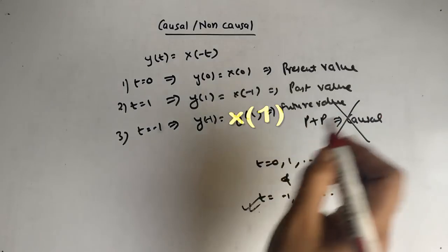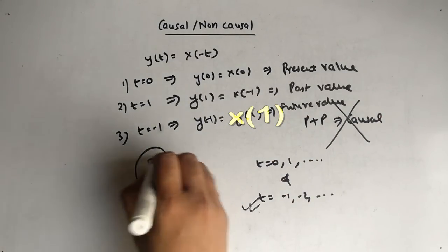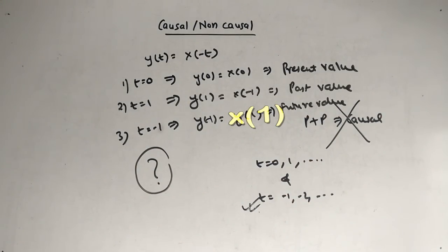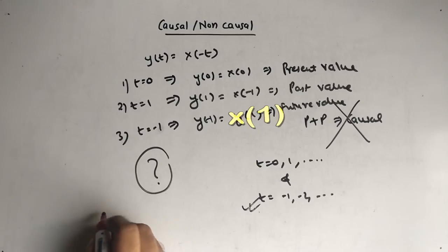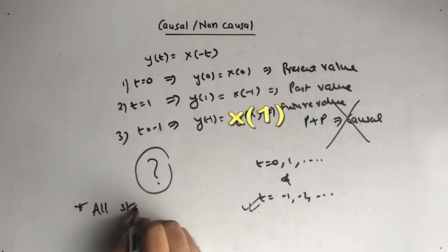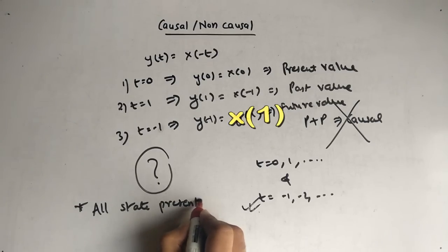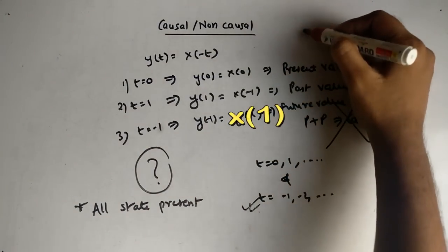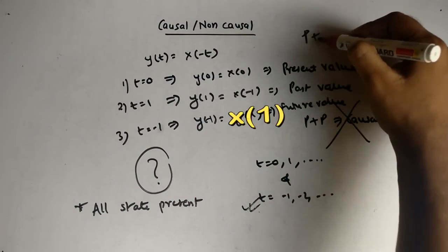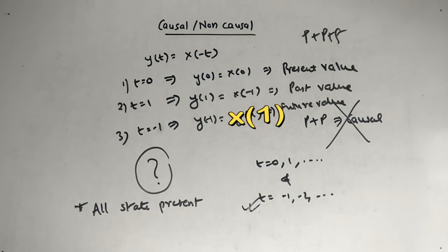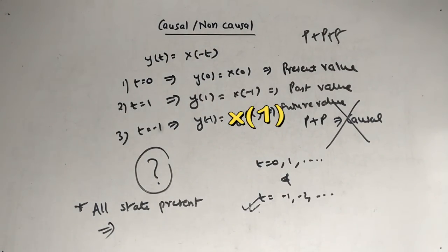So now there's a big question mark. This means that all states are present — present, past, and future all appear. So what will be the system? The answer for this is: it is a non-causal system.